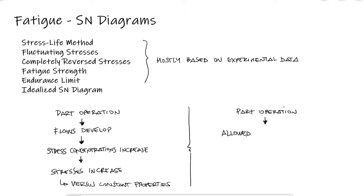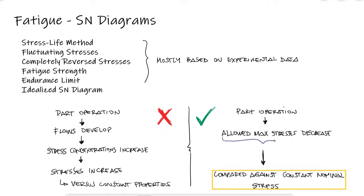Instead, in the stress life method for fatigue calculations, we compare nominal stresses that can be calculated using everything we've learned so far and that are kept unchanged over time to a strength property that decreases over time, or more precisely, a property that decreases as loading cycles occur. We call this property the fatigue strength.